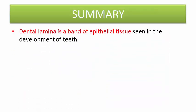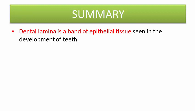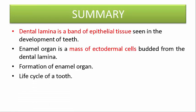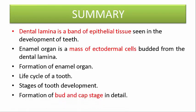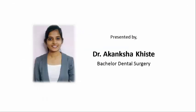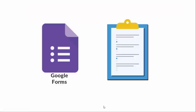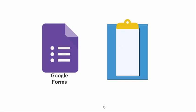To summarize what we learned today: dental lamina is a band of epithelial tissue seen in development of teeth; the enamel organ is a mass of ectodermal cells budded from the dental lamina. We also covered the formation of the enamel organ, the life cycle of the tooth including all stages, and the formation of the bud stage and cap stage in detail. You can find the link to the Google Form with MCQs related to this topic to test your understanding.